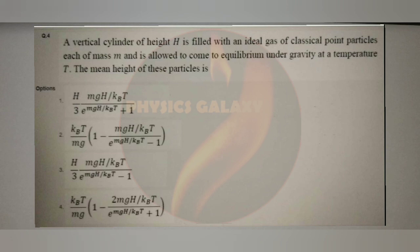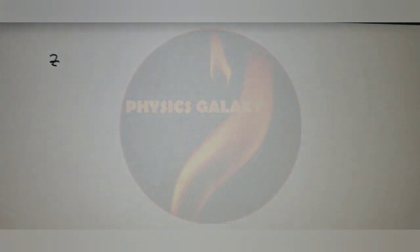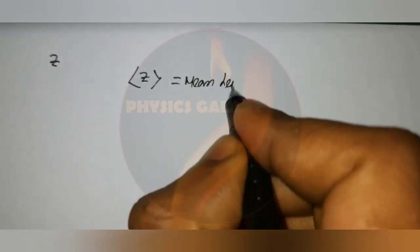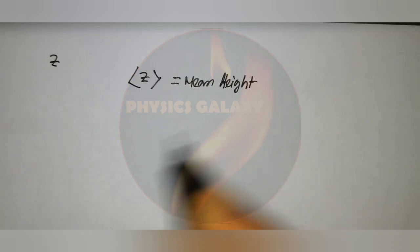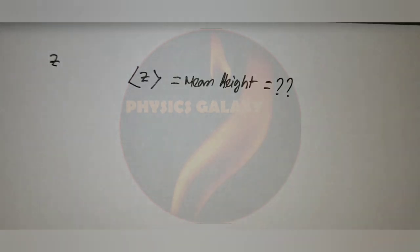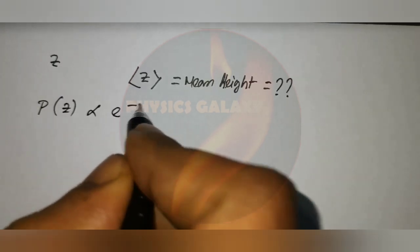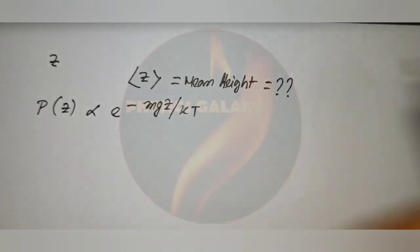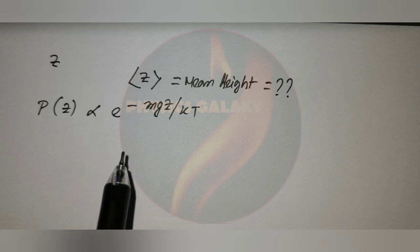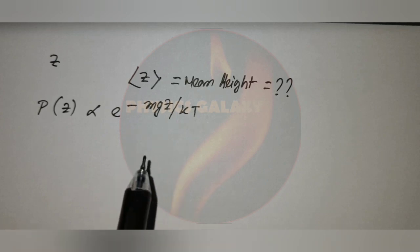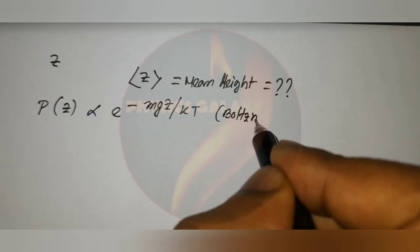Let the height of one molecule of gas be equal to Z — this is the height of one molecule. According to the Boltzmann distribution, the probability density that a molecule is at height Z is proportional to e to the power minus MgZ by kT. This is the Boltzmann distribution.